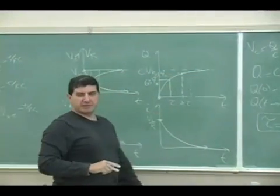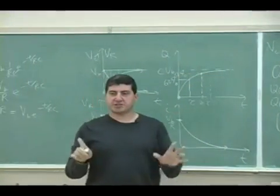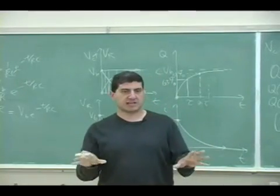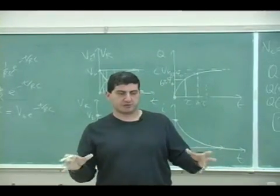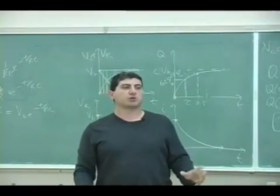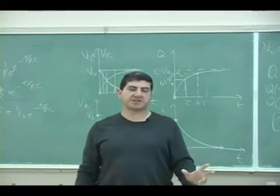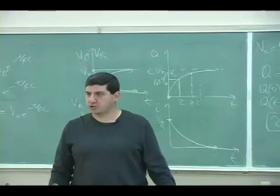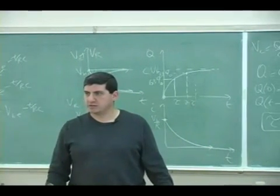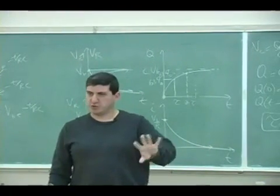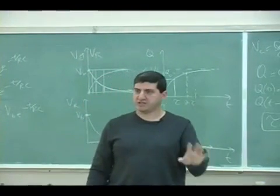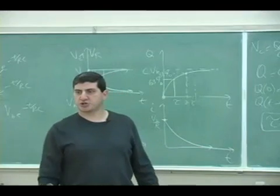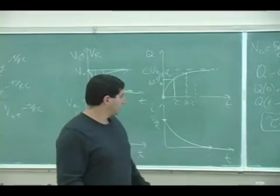So that means if you have a certain circuit and the total time constant, whatever it is, within two time constants that circuit has pretty much charged up. Between two to three time constants, it's pretty much charged up to whatever it's going to charge.